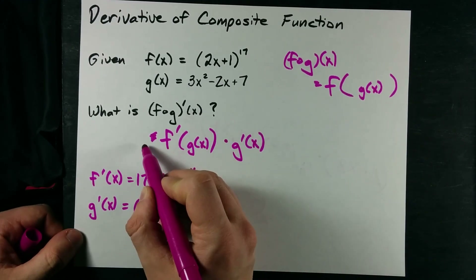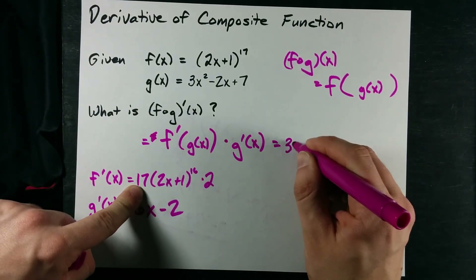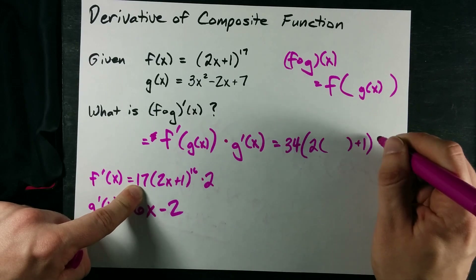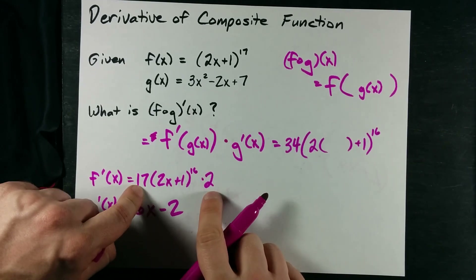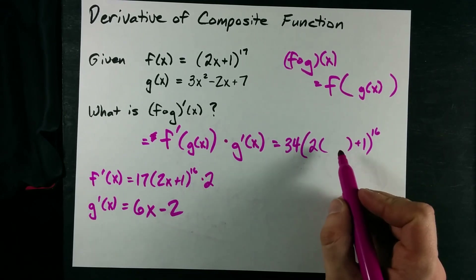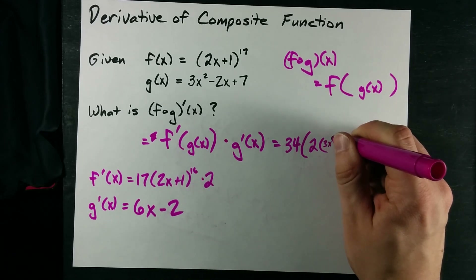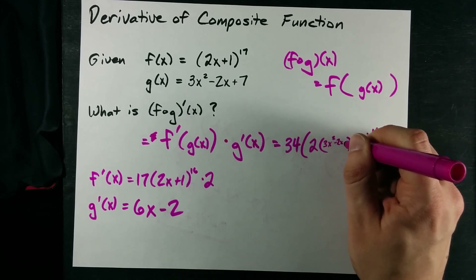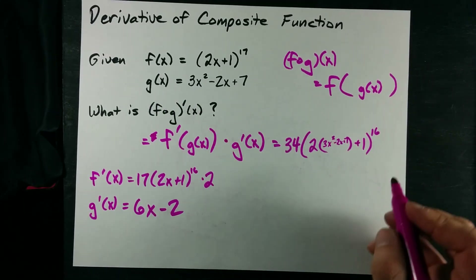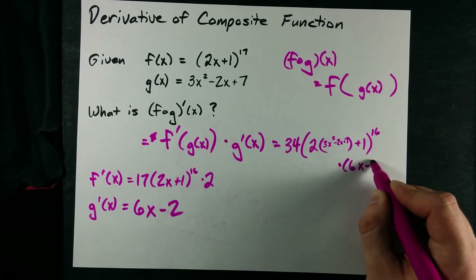So I'm going to plug each of those into this. f prime is 34 times 2x plus 1, all to the 16 — I took the 2 and the 17 and put them together. I left this because I'm not plugging in x, I'm plugging in g, and g was 3x squared minus 2x plus 7. Times the derivative of g, which in this case is 6x minus 2.